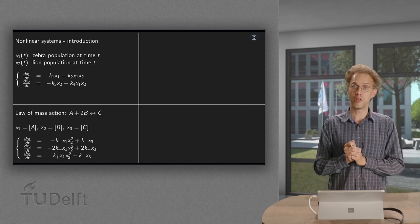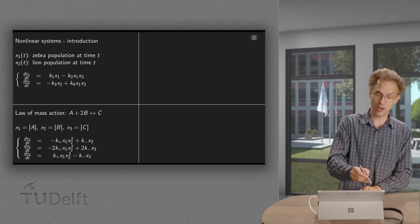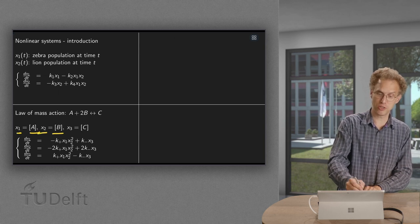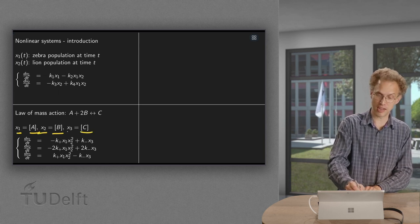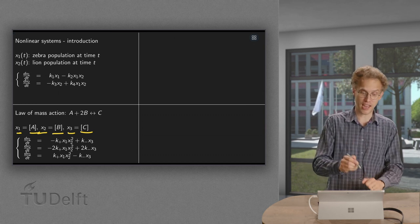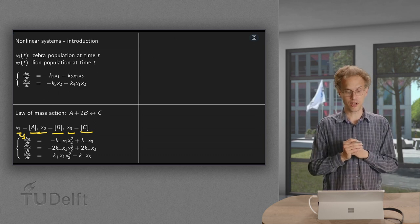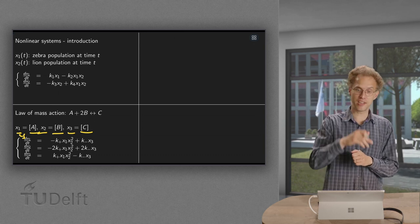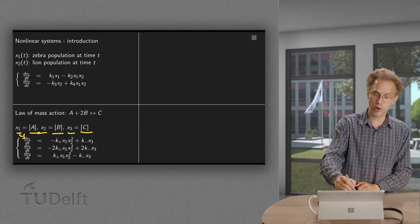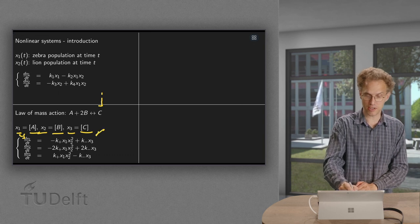So what happens to the concentrations of our chemicals? Let us denote the concentration of A by x1, the concentration of B by x2, and the concentration of C by x3. What do we know about the rate of change of A? Well, dx1/dt is produced by the back reaction. And the more C we have, the more we produce. So we get plus k_minus times x3.